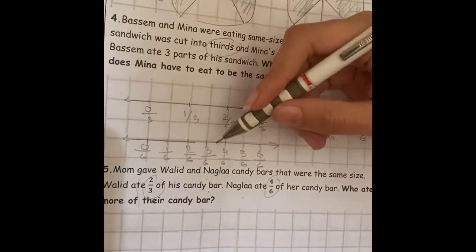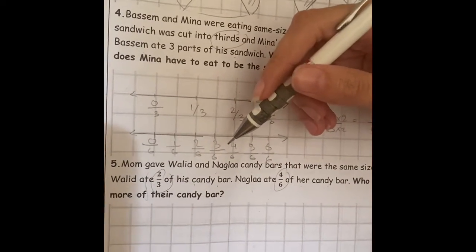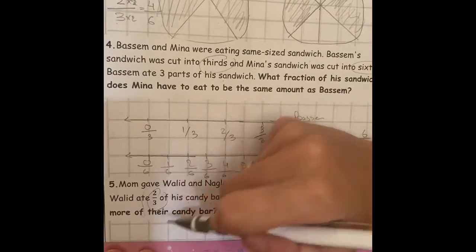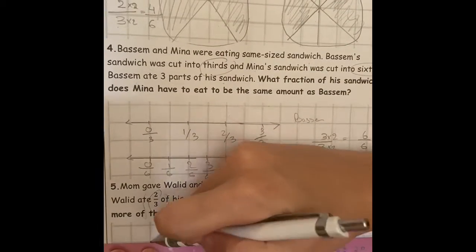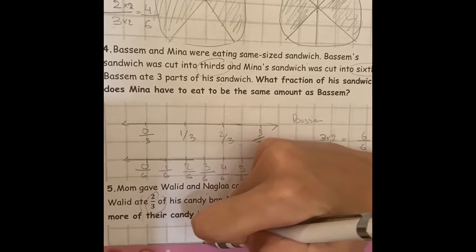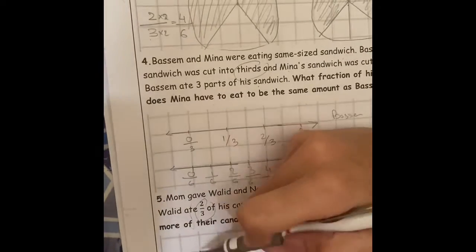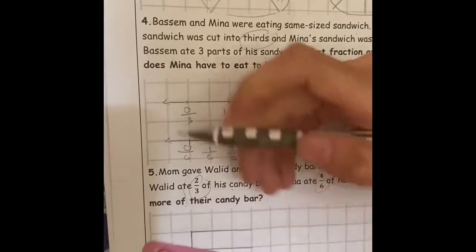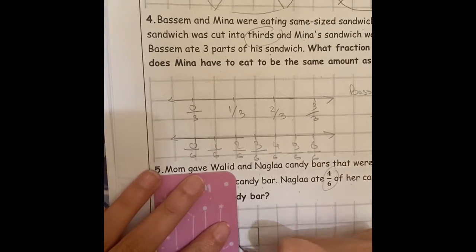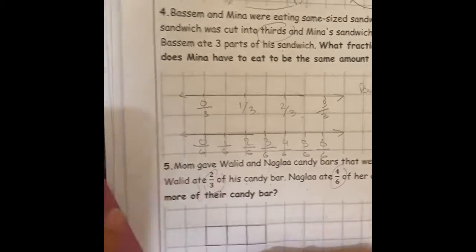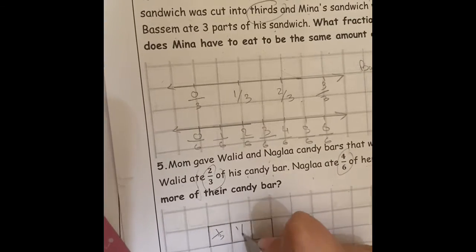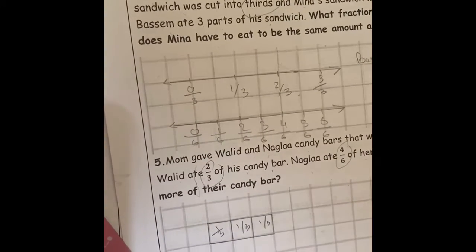First of all, I'm going to draw Waleed a stripe, which is thirds. 1 over 3, 1 over 3, 1 over 3.